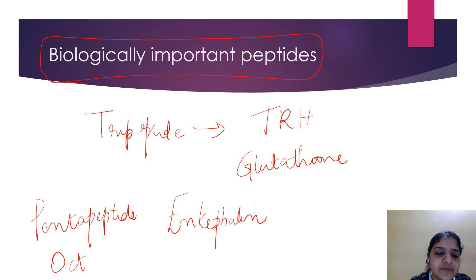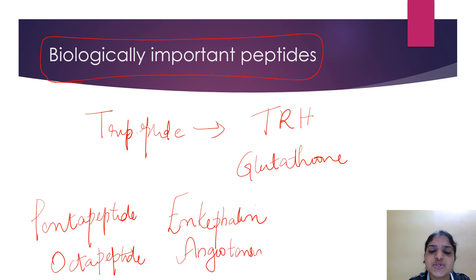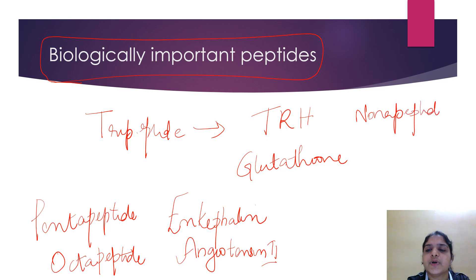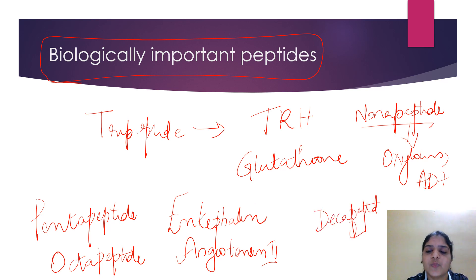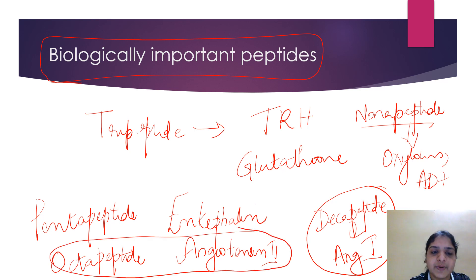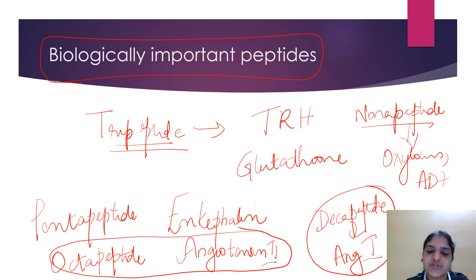Octapeptides like angiotensin 2; nonapeptides like oxytocin, vasopressin (ADH), and bradykinin; and decapeptides like angiotensin 1, which has 10 amino acid residues. Note that angiotensin 1 is a decapeptide, whereas angiotensin 2 is an octapeptide.